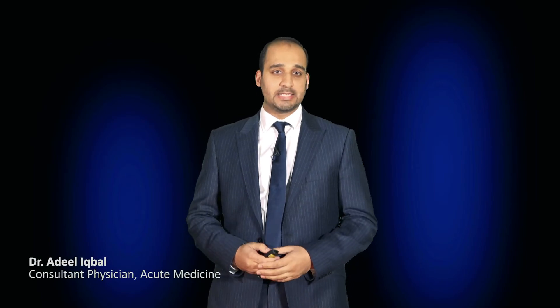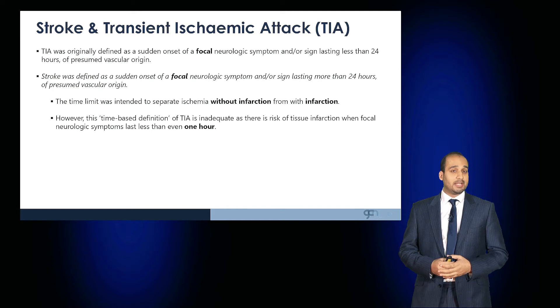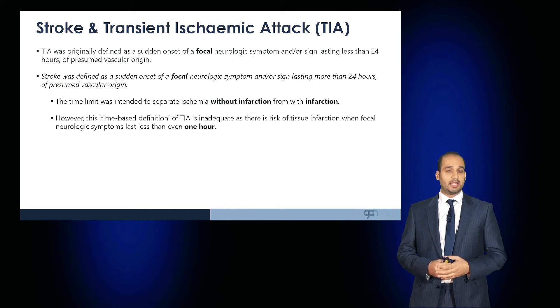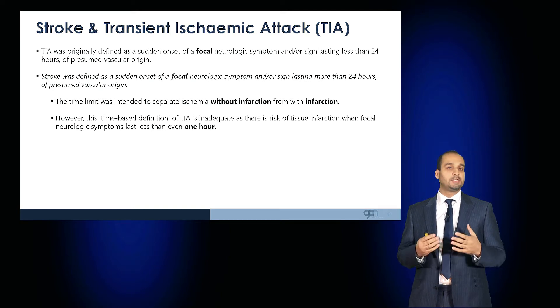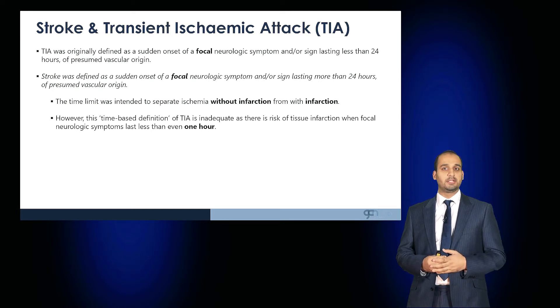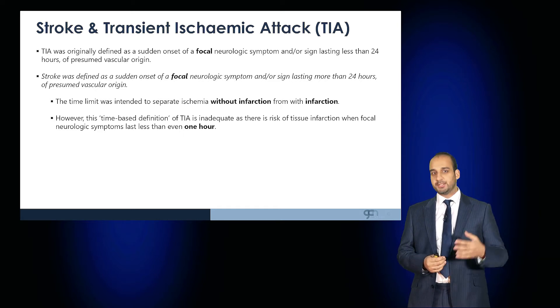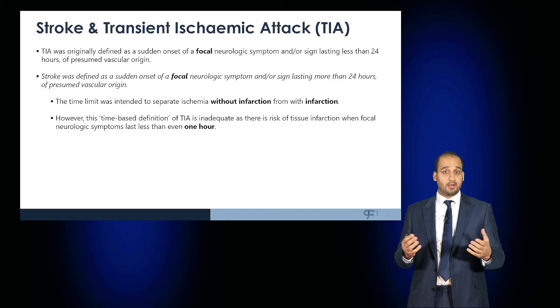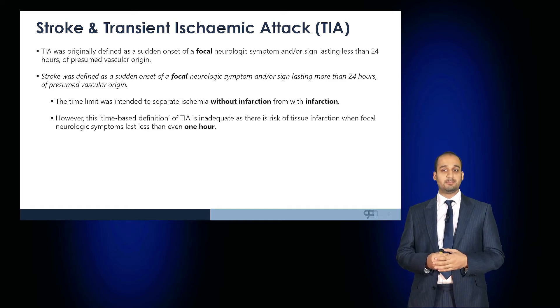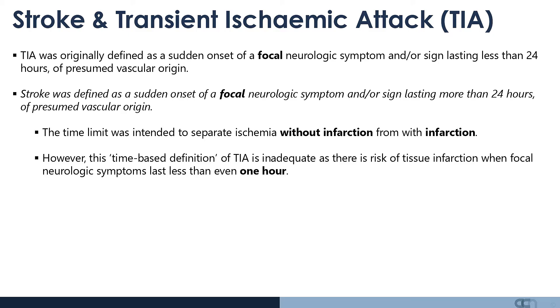Welcome to this Medicine Masterclass on Stroke and Transient Ischemic Attack. TIA, or transient ischemic attack, was originally defined as a sudden onset of focal neurological symptoms and/or signs lasting less than 24 hours of presumed vascular origin. Stroke was defined as an onset of focal neurological signs and symptoms lasting more than 24 hours of presumed vascular origin.